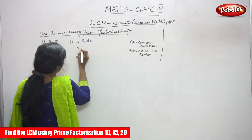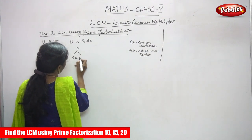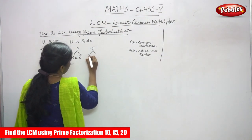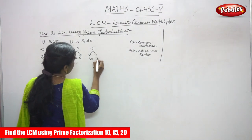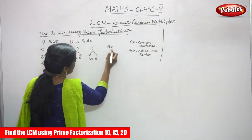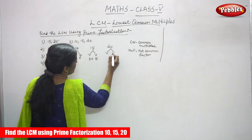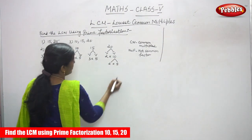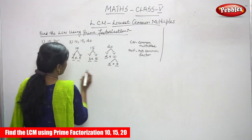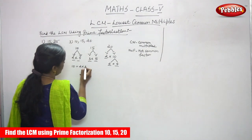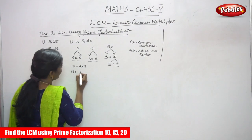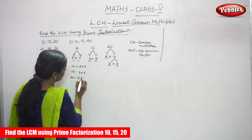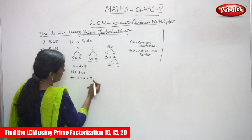So 10 — the factor of 10 is 2 into 5. Next, 15 — that is 3 into 5. After that, 20 — that is 2 into 10, and then 2 into 5. So these are the factors: for 10 you write 2 into 5, for 15 you write 3 into 5, and for 20 you write 2 into 2 into 5.